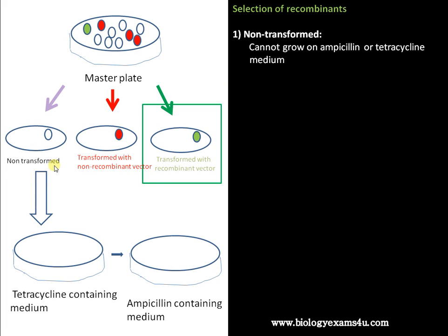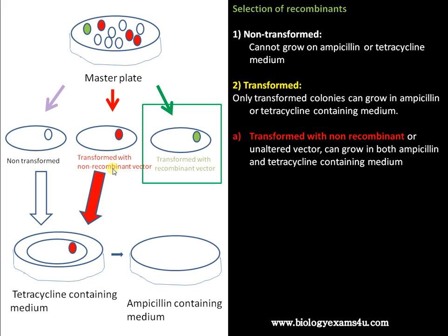For the first type of colony — the non-transformed one — natural bacteria do not have ampicillin or tetracycline resistance capability and do not resist antibiotics. So this particular group cannot grow on tetracycline or ampicillin-containing medium, and these colonies can be excluded very easily. The second group, transformed with non-recombinant vector, can grow on both tetracycline and ampicillin-containing medium.